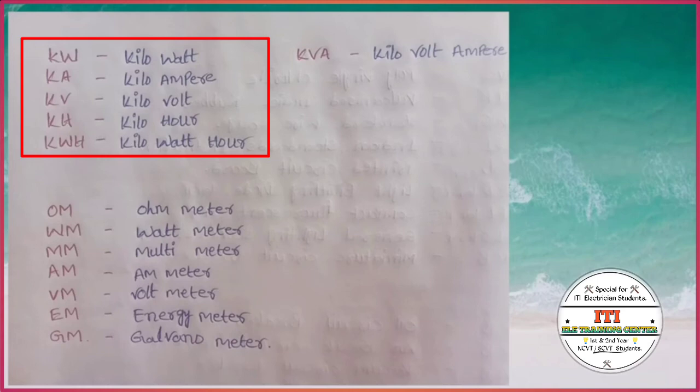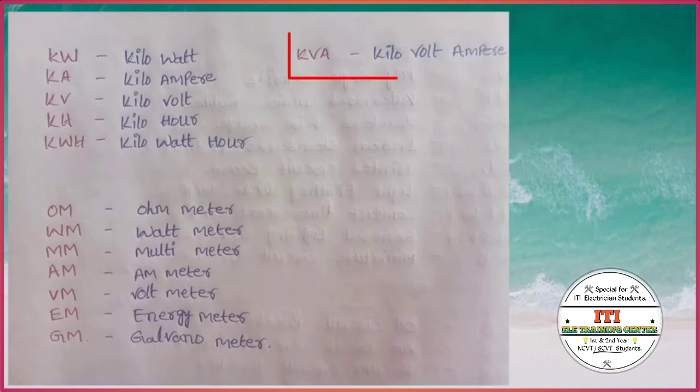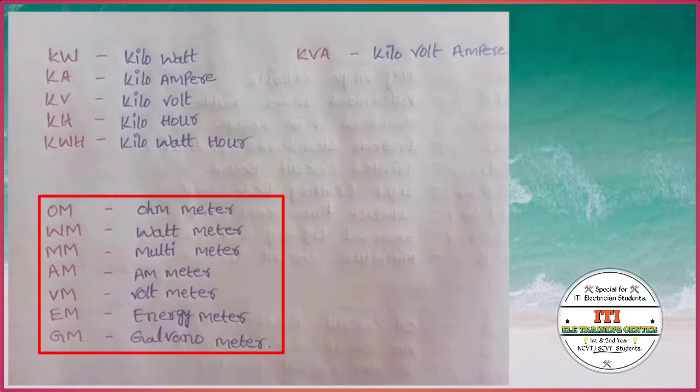KWH: kilowatt hour. KVA: kilo volt ampere. OM: ohm meter. WM: watt meter. MM: multimeter. AM: ammeter. VM: voltmeter. EM: energy meter. GM: galvanometer.